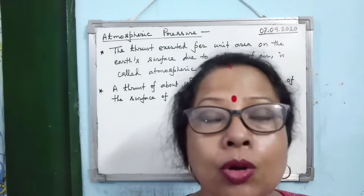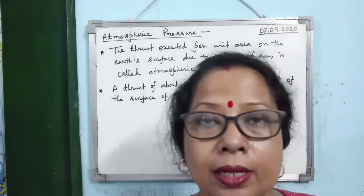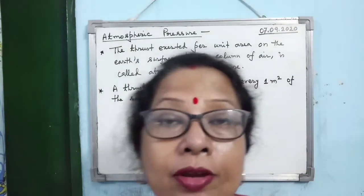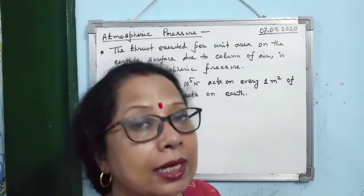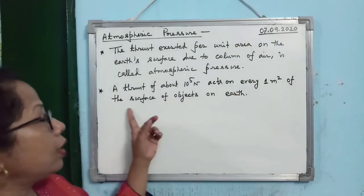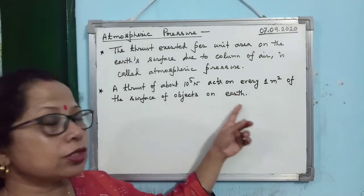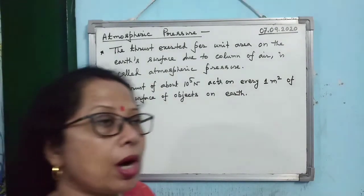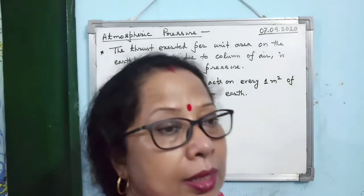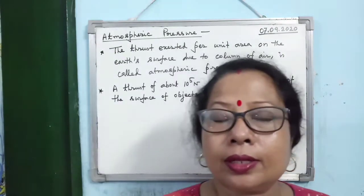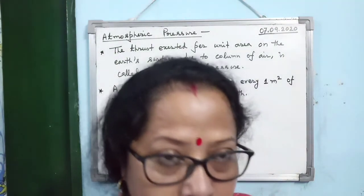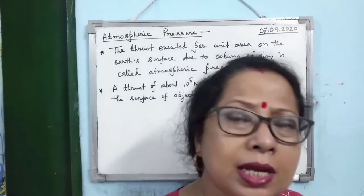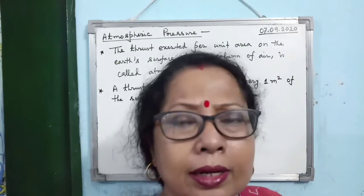One atmospheric pressure means a thrust of 10⁵ newtons acts on 1 square meter of the surface of objects on Earth. Now, how can we demonstrate the existence of atmospheric pressure? That is a very common experiment — crushing the tin.